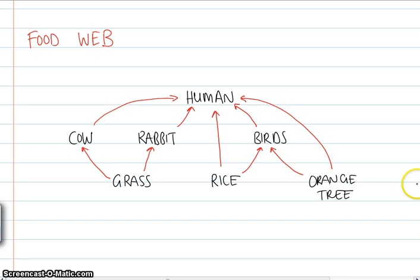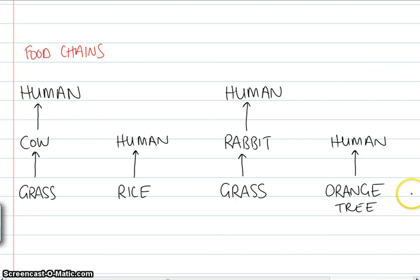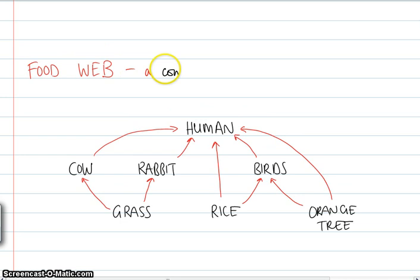So therefore, combining a number of different food chains, we get a food web. Combination of food chains.